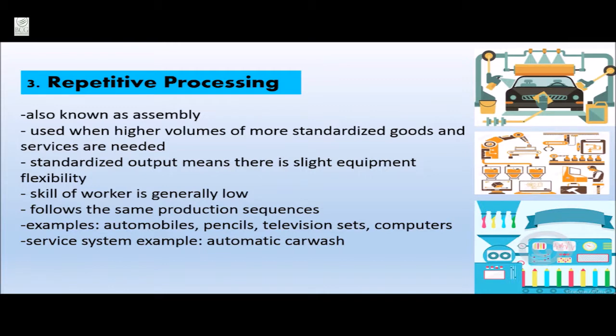The next type is repetitive processing, also known as assembly, which is used when higher volumes of more standardized goods and services are needed. Standardized output means there is slight equipment flexibility. Skill of workers is generally low and it follows the same production sequences. Examples of products made by this type of system include automobiles, pencils, television sets, and computers.